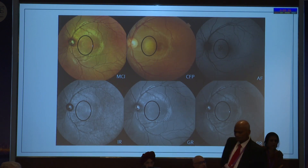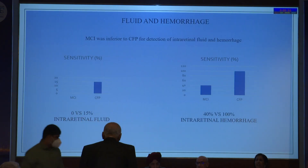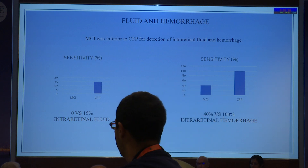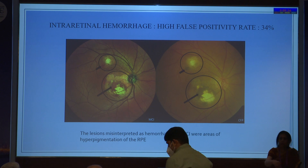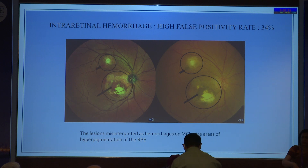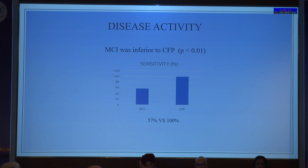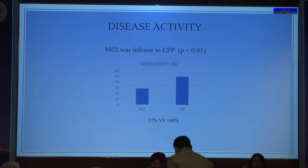Similarly, a choroidal granuloma was missed on the multicolor image which was clearly seen on the fundus photo. With regard to intra-retinal fluid and hemorrhage, MCI was inferior to fundus photo for both. Of particular interest was the high false positivity rate of MCI in detecting intra-retinal hemorrhage. This was due to RPE hyperpigmentation, which appeared dark red in color as pointed out by the arrows and gave the appearance of hemorrhage. MCI was also inferior to CFP in identification of disease activity, with sensitivity of 57% compared to 100% on fundus photo and a significant p-value.